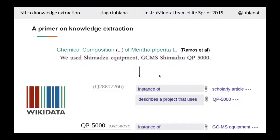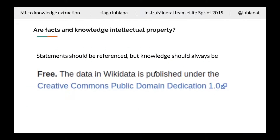For example, this is an article — it's an instance of a scholarly article. It describes a part that uses a QPU 5000 machine, and this QPU 5000 machine is an instance of a piece of equipment. So it's getting this out of the paper. Why is this important for open science? Because the knowledge is hidden there and we have to get it out. Statements should be referenced, but knowledge should always be free. In Wikidata and other knowledge databases, data is usually in the public domain, creative commons — you can use and reuse it.